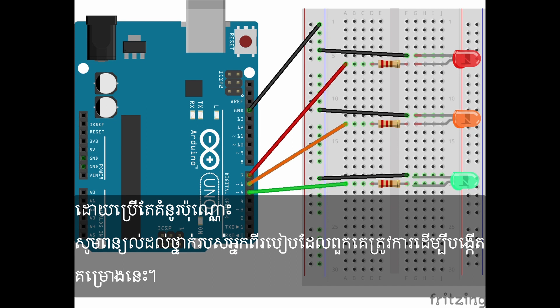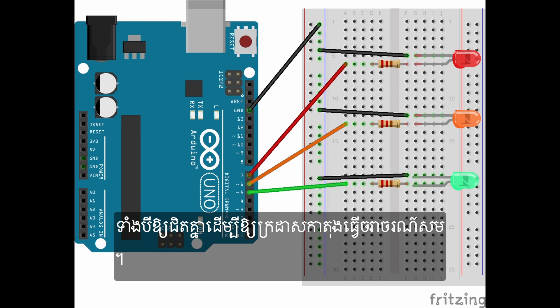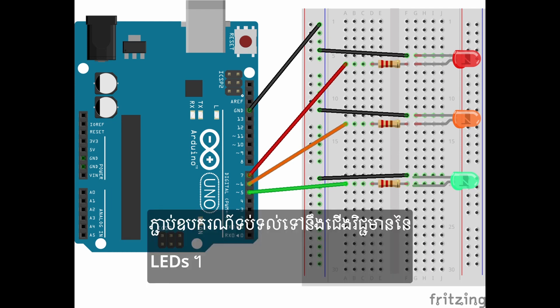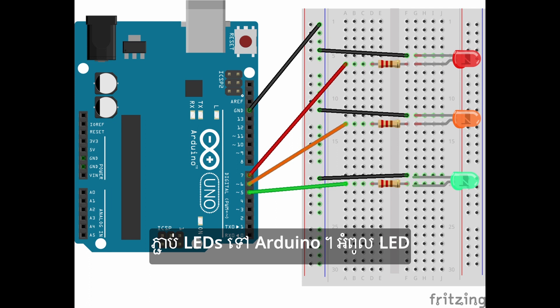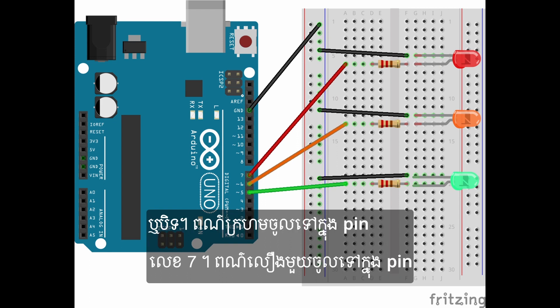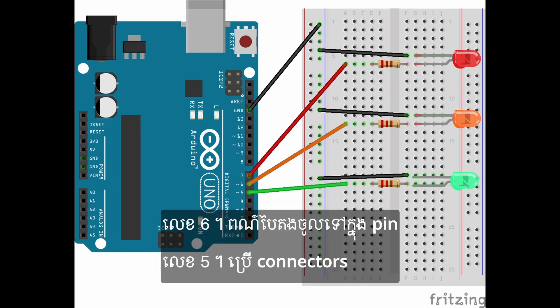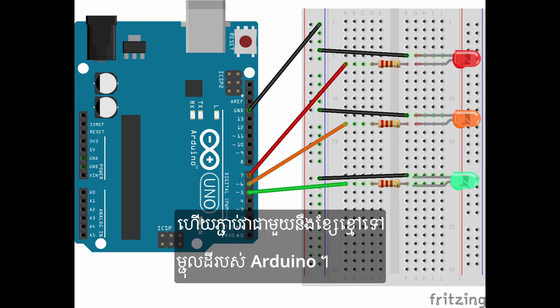Only using the drawing, explain to your class how they need to build this project. First, put the three LEDs closely together so that the traffic light cardboard will fit. Attach the resistors to the positive legs of the LEDs. Connect the LEDs to the Arduino — each of the LEDs will need a digital pin to receive the command to go on or off. The red one goes into pin number 7, the yellow one goes into pin number 6, the green one goes into pin number 5. Use the small connectors to bridge towards the ground rail of the breadboard and connect it with the black wire to the ground pin of the Arduino.